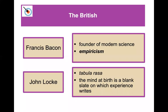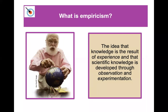The British philosopher Francis Bacon is a very important name in science because he came up with the idea of empiricism — he's thought of as the founder of modern science. John Locke had ideas more similar to Aristotle: that we're born a blank slate, or tabula rasa, meaning the mind at birth is a blank slate on which experience writes. Empiricism is the idea that knowledge is the result of experience and that scientific knowledge is developed through observation and experimentation.